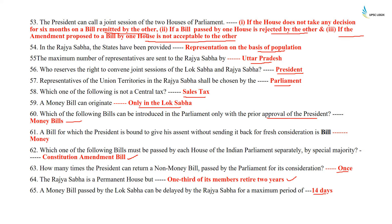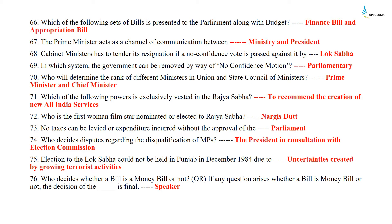Which set of bills is presented to the Parliament along with the budget? It is the Finance Bill and the Appropriation Bill. The Prime Minister acts as a channel of communication between the ministry and the President. Cabinet ministers have to tender their resignation if a no-confidence vote is passed against them in the Lok Sabha. In which system can the government be removed by way of a no-confidence motion? It is the parliamentary form of government. Who will determine the rank of different ministers in union and state councils of ministers? It is the Prime Minister and the Chief Minister. Which power is exclusively vested in the Rajya Sabha? To recommend the creation of a new All India Service.